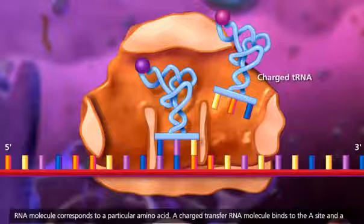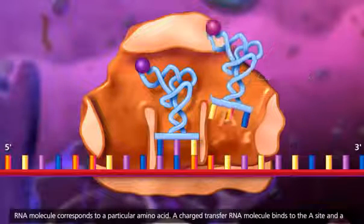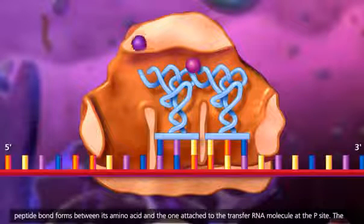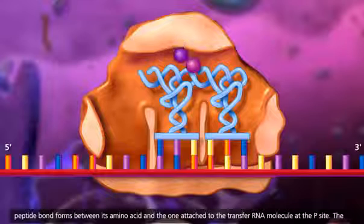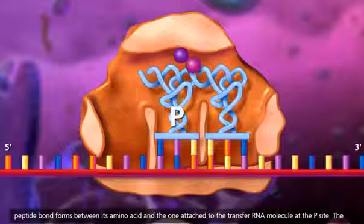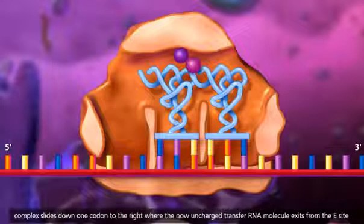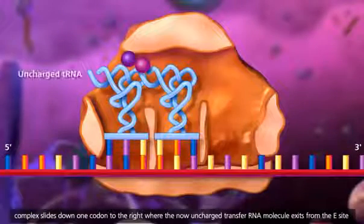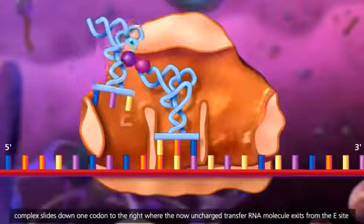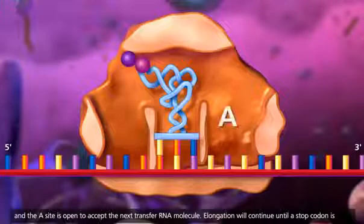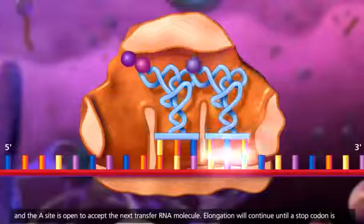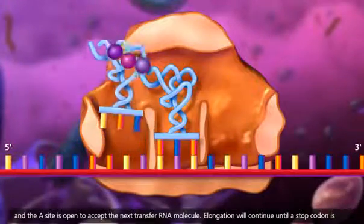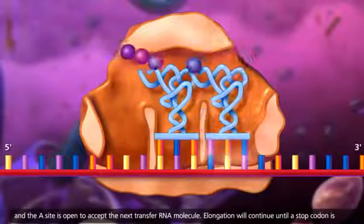A charged transfer RNA molecule binds to the A site and a peptide bond forms between its amino acid and the one attached to the transfer RNA molecule at the P site. The complex slides down one codon to the right where the now uncharged transfer RNA molecule exits from the E site and the A site is open to accept the next transfer RNA molecule. Elongation will continue until a stop codon is reached.